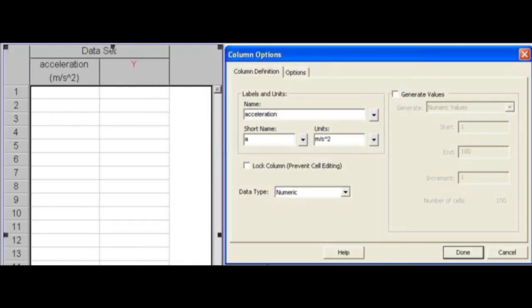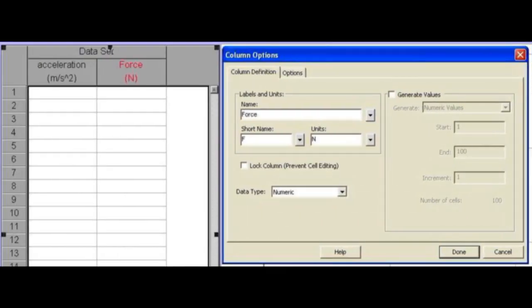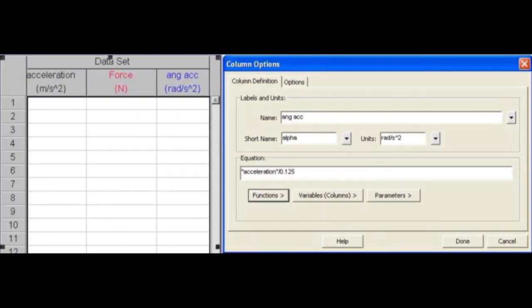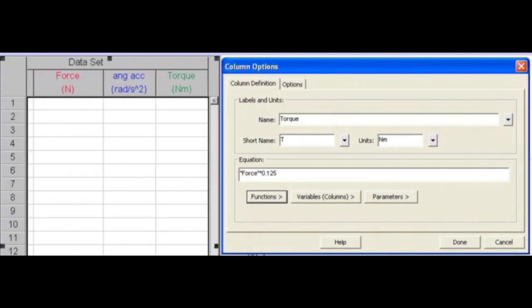Open graphical analysis and prepare columns for accelerations and then forces. Measure the radius of the wheel by dividing the diameter by 2. A new calculated column of angular accelerations may be defined by dividing the tangential accelerations by the radius r, whatever that number is in meters. Create a new calculated column of torque by multiplying the tangential force, string tension, by the radius of the wheel.